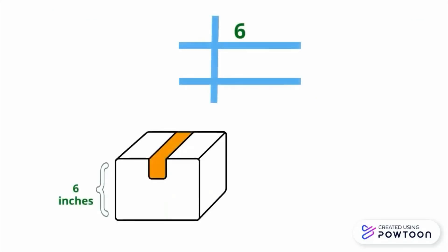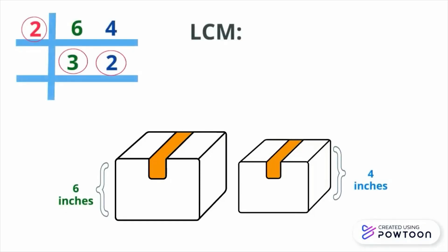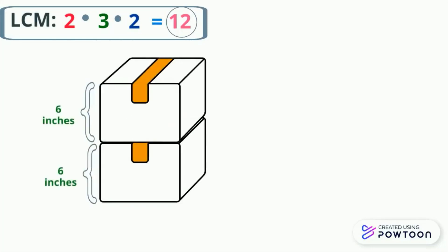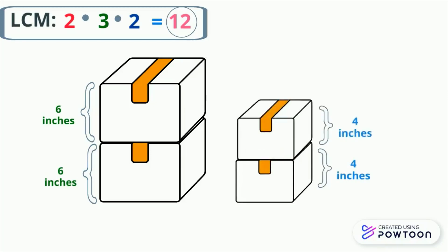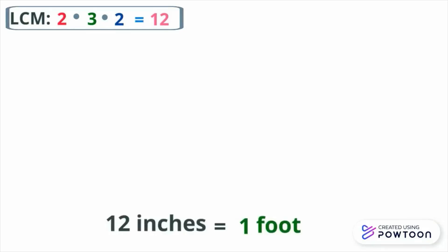We have 6-inch and 4-inch tall boxes. Both numbers are divisible by 2. Dividing 6 by 2 gives 3, and 4 divided by 2 is 2. There is no common divisor for 3 and 2. Therefore, the LCM is the product of 2 × 3 × 2 = 12. Since the LCM is 12, there will be two 6-inch boxes and three 4-inch boxes. The least height is 12 inches. Since 12 inches equals 1 foot, the final answer is 1 foot.